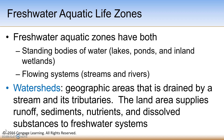The definition of a watershed is on the screen in front of you. It is a geographic area that's drained by a stream and its tributaries. The land area supplies the runoff, sediments, nutrients, and dissolved substances to the freshwater systems.